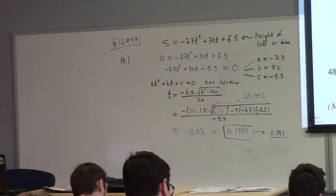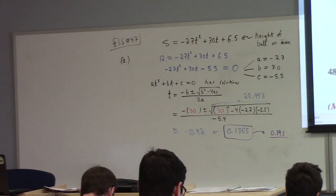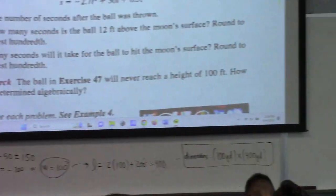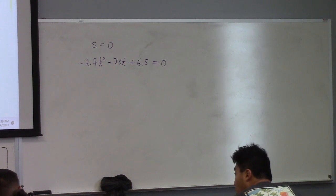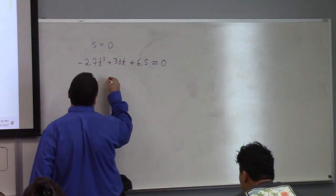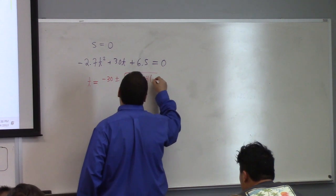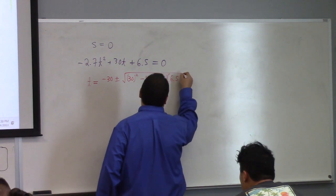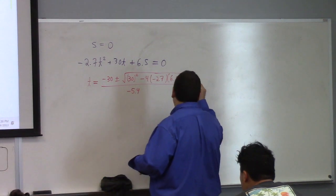I would recommend that we use the quadratic equation again to solve that. We know how to solve this, right? T is equal to minus 30 plus or minus the square root of 30 squared minus 4 times minus 2.7 times 6.5 all divided by minus 5.4 because that's 2 times 2.7. And if you work that out, what do we get?